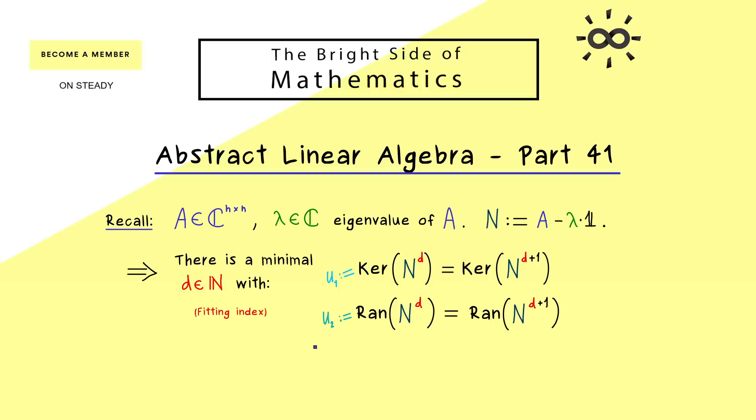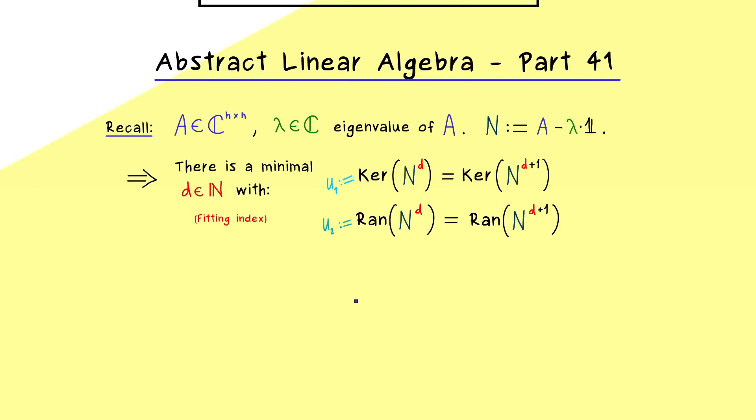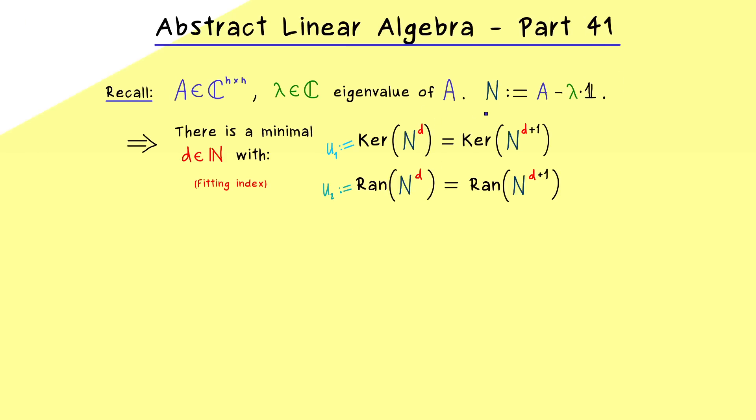And in fact, in the last video we have already learned that exactly this leads to a so-called block diagonalization of the matrix A. This means that A is similar to this block form which we can interpret as splitting A up into two smaller matrices.